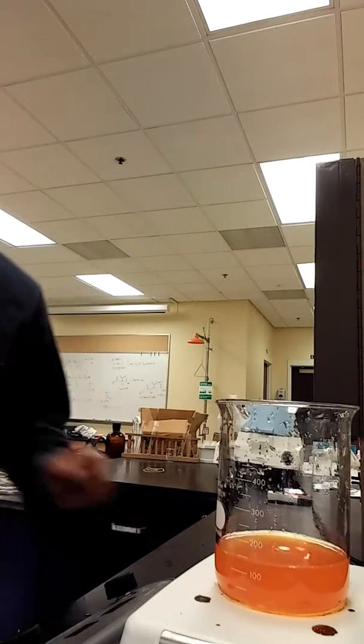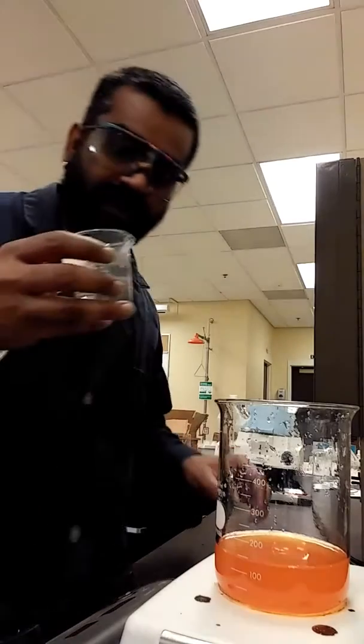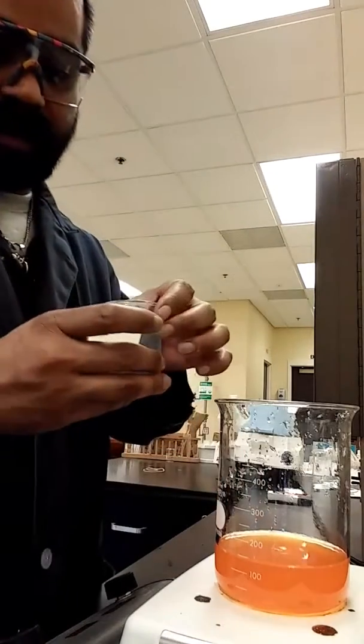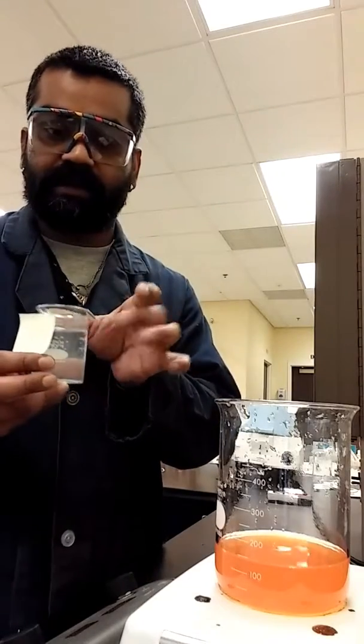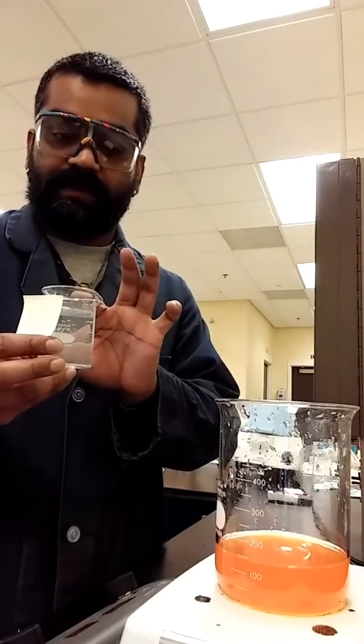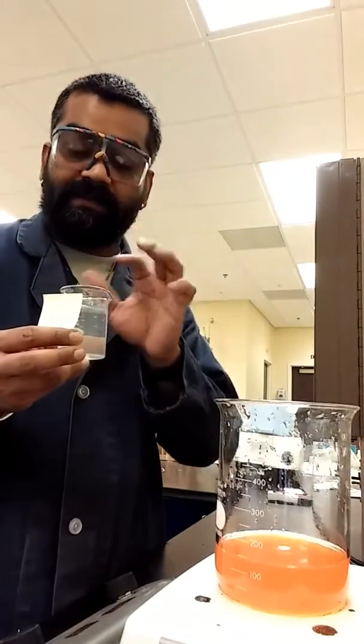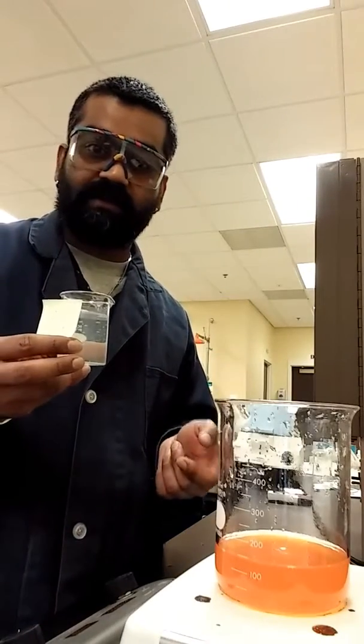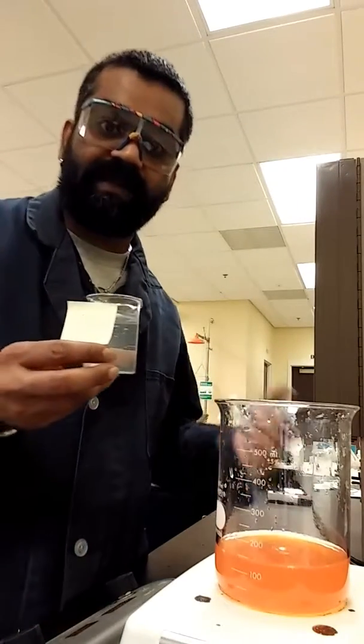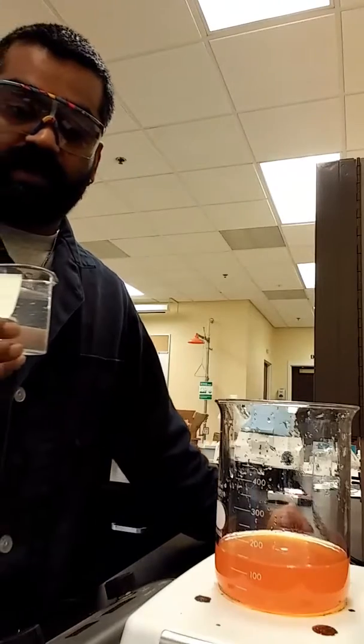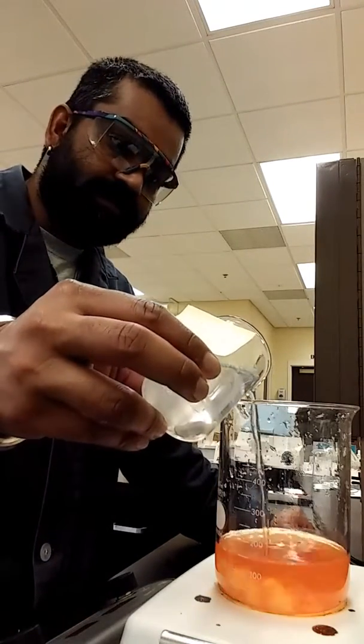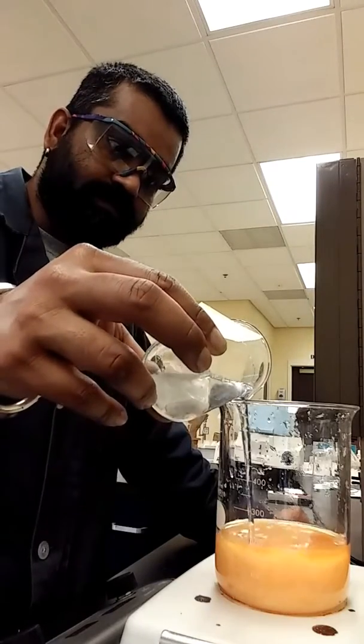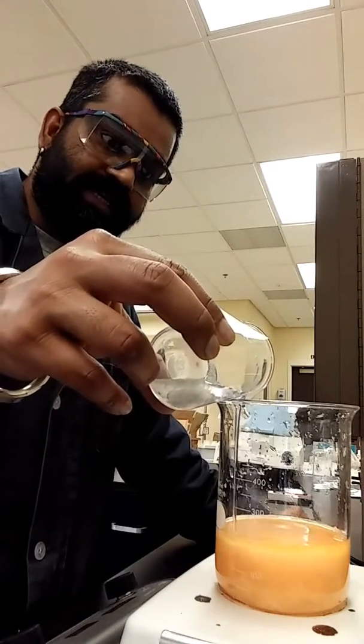Now we're going to add some calcium chloride. I will be providing the stock solution to all my students so that they can go ahead and add the entire batch of it in here. Here I have about 28 grams of calcium chloride in about 75 milliliters of water. So we're just going to add all of this in here.